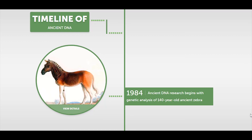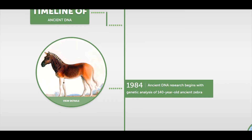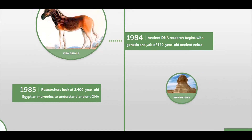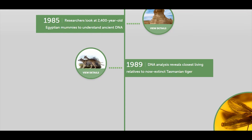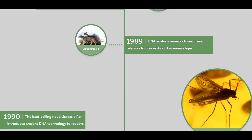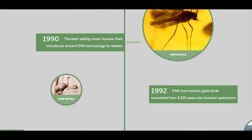Now the timeline of ancient DNA: In 1984, ancient DNA research began with the genetic analysis of a 140-year-old quagga. In 1985, researchers looked at 2,400-year-old Egyptian mummies to understand ancient DNA. In 1989, DNA analysis revealed the closest living relative of the now-extinct Tasmanian tiger.